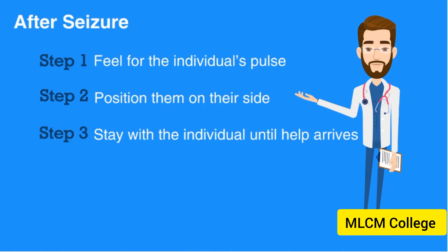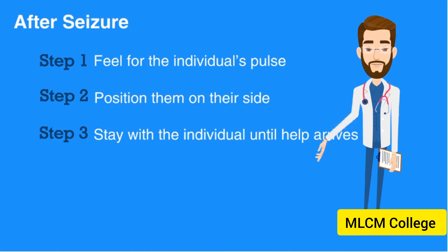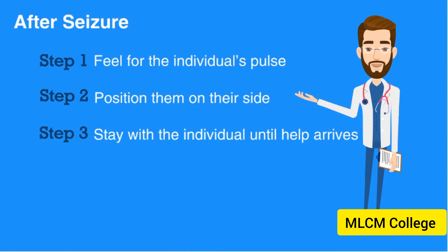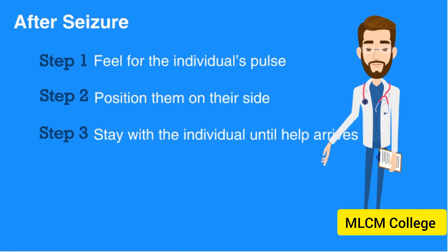After the seizure is over: Step 1, feel for the individual's pulse. Step 2, position them on their side to reduce the chance of choking on any vomit — it is possible for them to throw up after a seizure. Step 3, stay with the individual until help arrives. Do not attempt to restrain an individual having a seizure, and do not try to open their mouth or put anything in between their teeth.